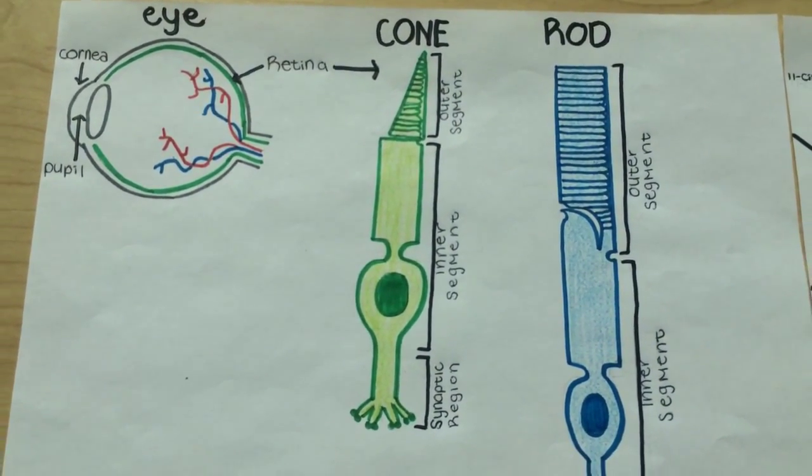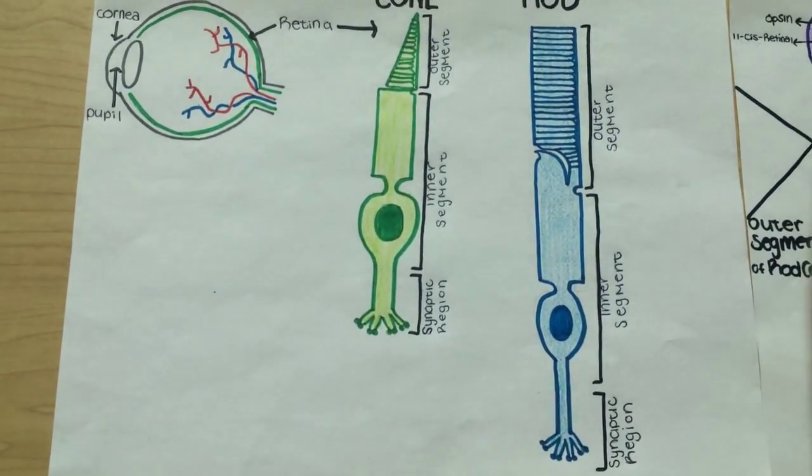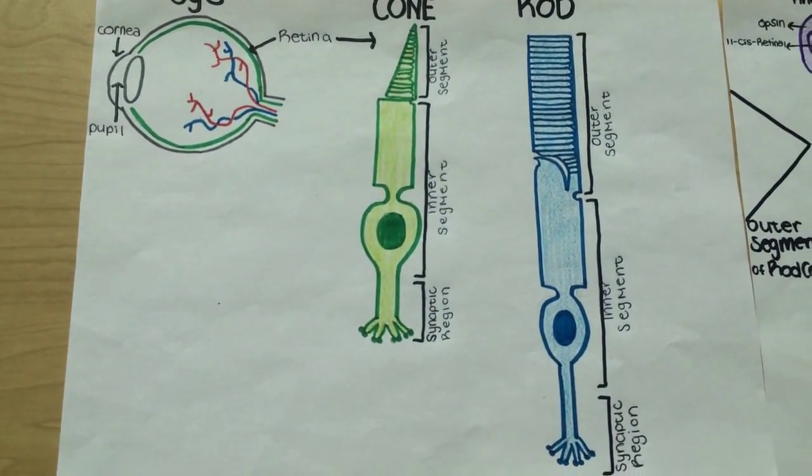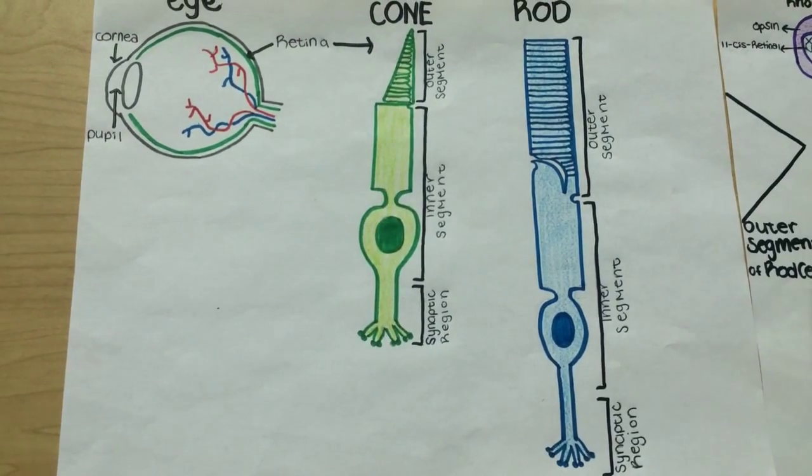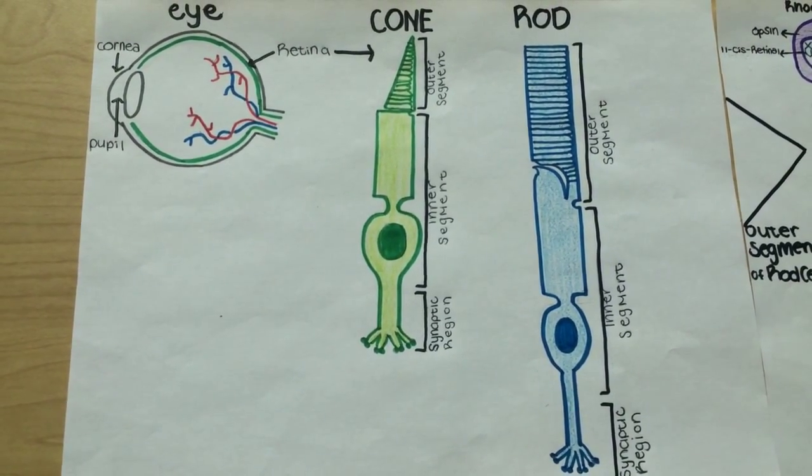We are going to focus on the rod cells, which are specialized for night vision. A rod cell has three main regions: an outer segment, an inner segment, and a synaptic region.